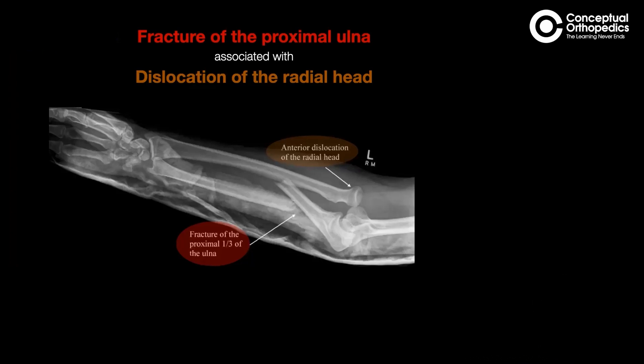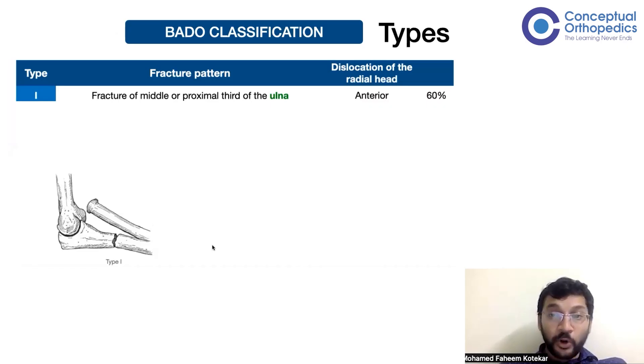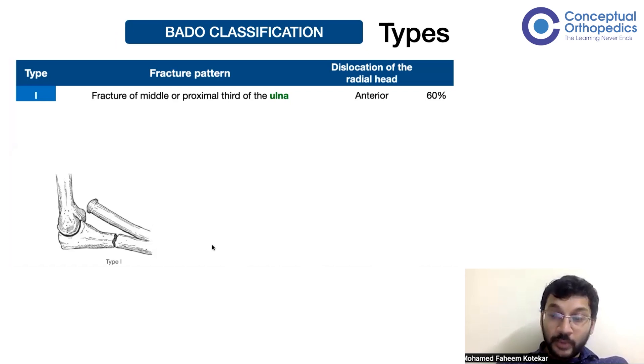With these two components, we can have many different varieties of permutations and combinations depending on where the ulna is fractured and which direction the radial head is dislocated. This was later described by Bado into four types. This is Bado's classification, which is the most commonly used classification for Monteggia fractures.